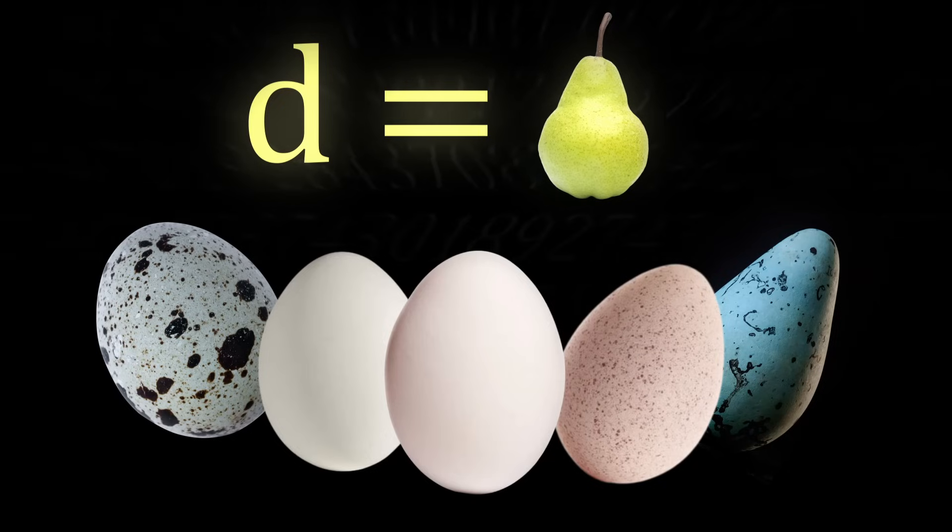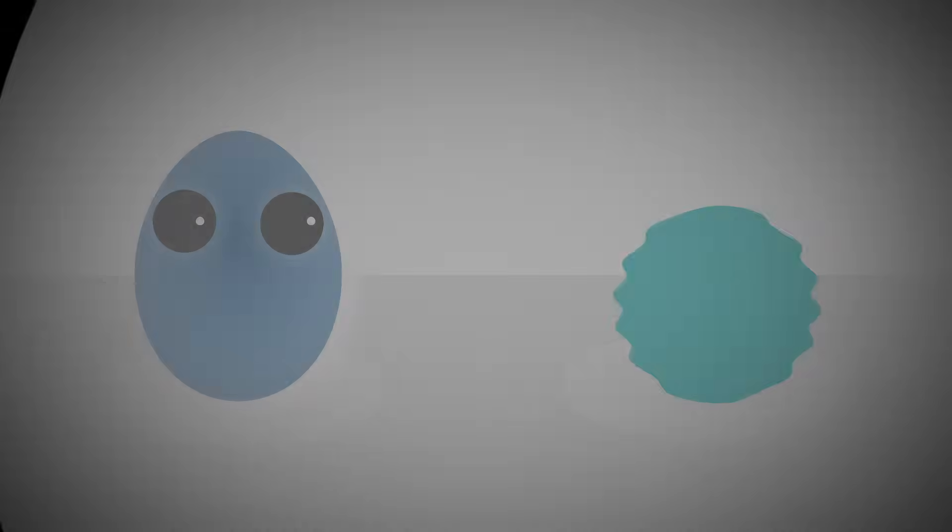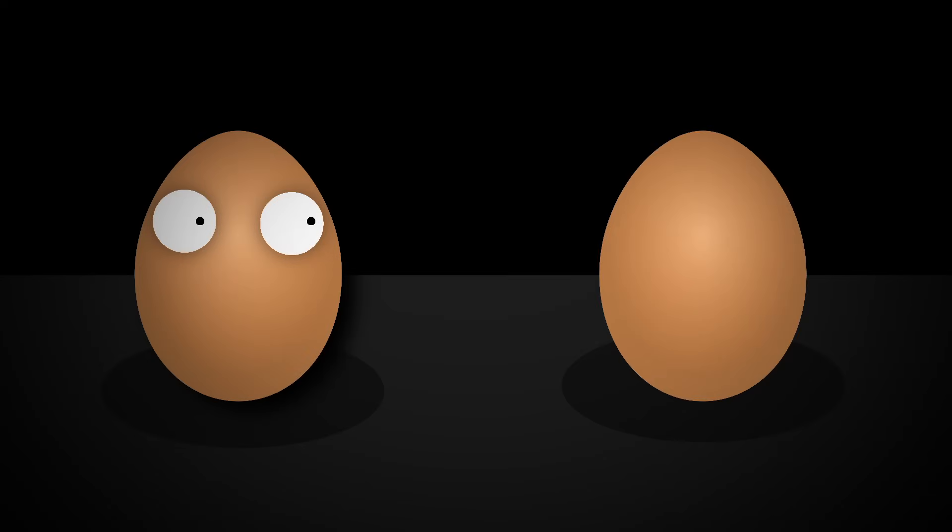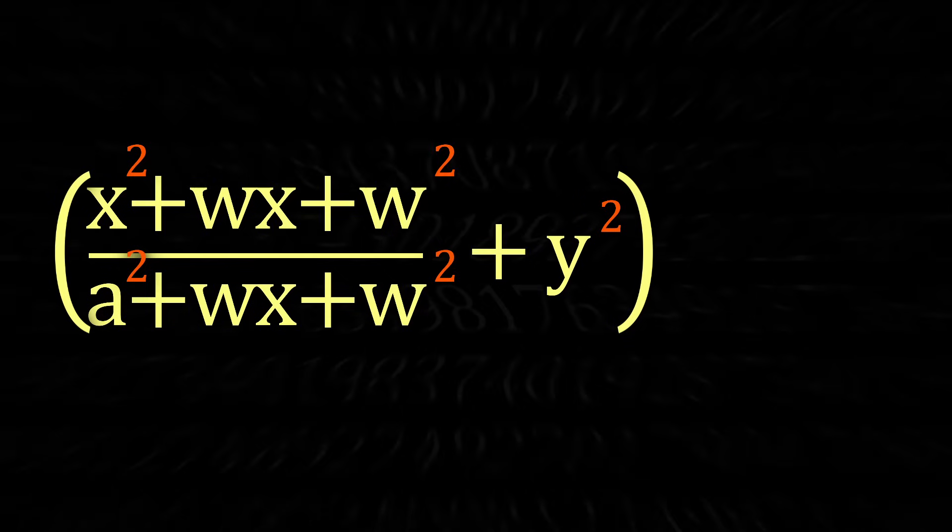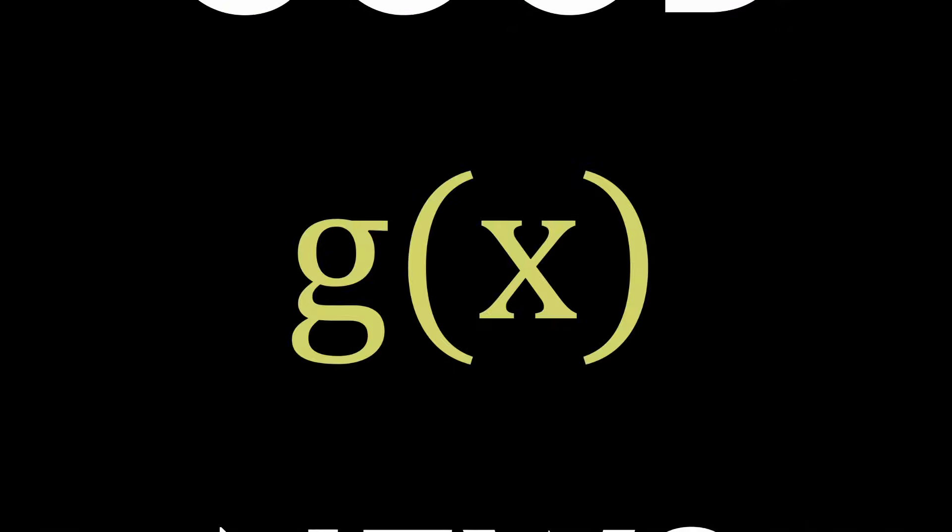This sounds wonderful, doesn't it? An egg equation capable of matching every shape, and all we have to do is multiply this oval equation with a function called gx. Good news, it's just one multiplication. Bad news,